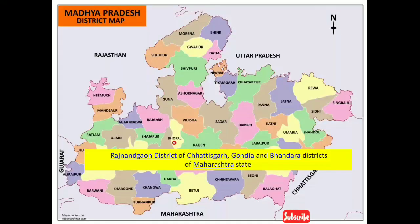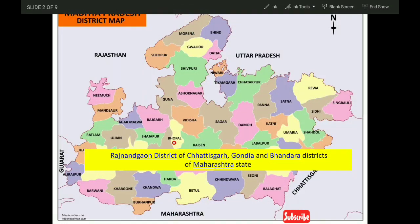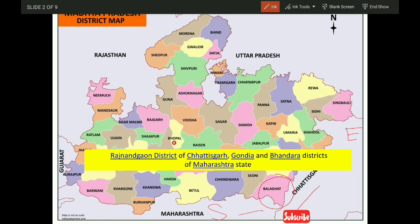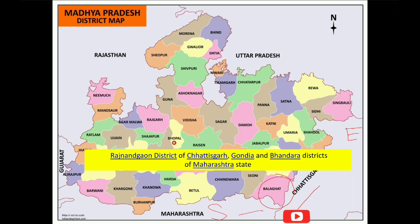Looking at the map of Madhya Pradesh, Balaghat is located in the southeast corner of the state. Talking about its borders: Maharashtra borders it here, and Chhattisgarh borders it here. The district that touches it from Chhattisgarh is Rajnandgaon, whereas from Maharashtra there are two districts — Gondiya and Bhandara. So all in all, three districts from other states border Balaghat.